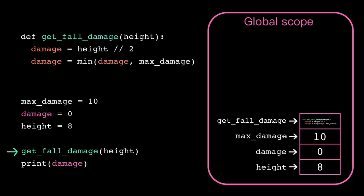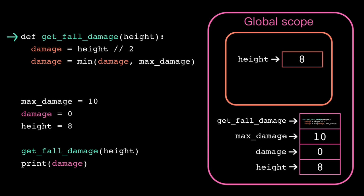Then we execute this function call. So the computer starts off by creating a new stack frame, which, remember, is just a separate region of short-term memory. The parameter height and then this damage get stored in that new stack frame. Notice that these don't get stored in that base global level, so we don't overwrite the value of this existing global damage.